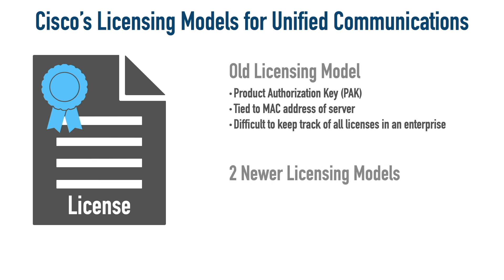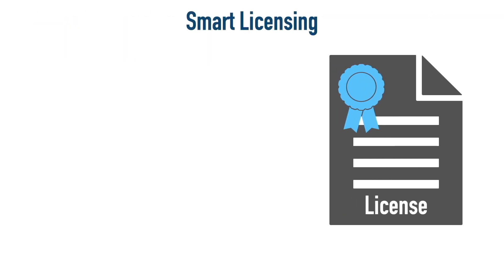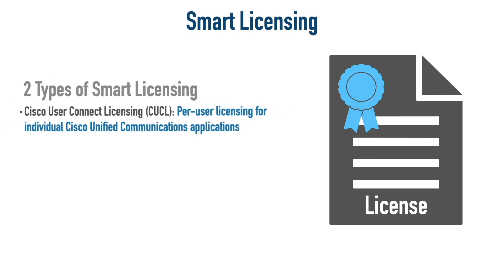The two newer licensing models Cisco wants us to know about are smart licensing and the even newer flex licensing. Smart licensing breaks down into two different types. First, we have Cisco User Connect Licensing, or CUCL, which is per-user licensing for an individual application — such as Cisco Unity Connection. It's not just per-user licensing; it's per-user licensing per Cisco Unified Communications application.